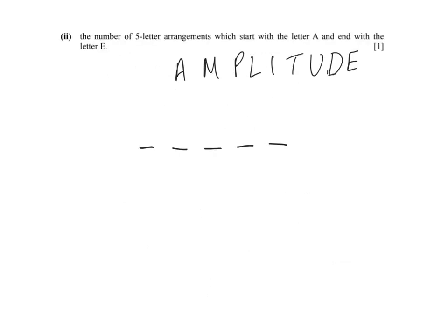This question is now asking us to find a number of five-letter arrangements which start with the letter A and end with the letter E. As there's only one A and one E, there can only be one option for the ends, and we have seven letters remaining. So it would be 1 times 7 times 6 times 5 times 1. Hence, our answer would be 210.